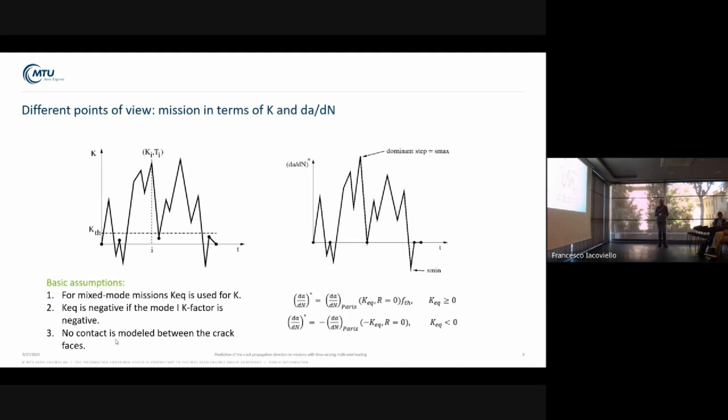Here are the basic assumptions for mixed-mode missions we use. We do not use contact, so the faces of the crack can interpenetrate. We read all three K values, including negative K values, and the K equivalent is negative if the K1 factor is negative. The K equivalent inherits the sign of K1, and the same applies for dA/dN star. Therefore, we also get negative values for dA/dN star.